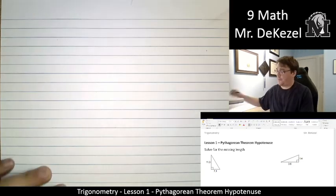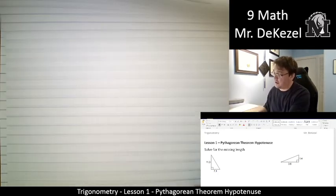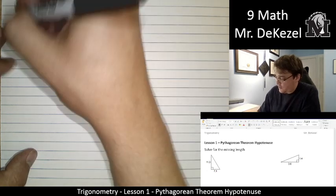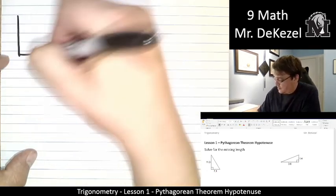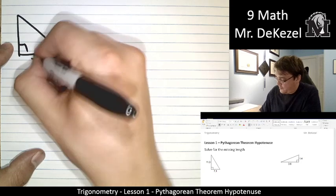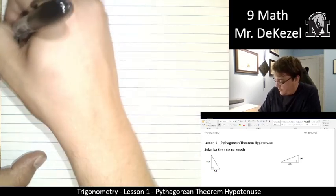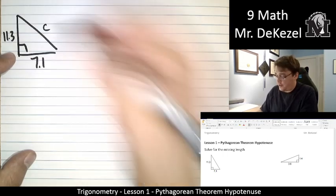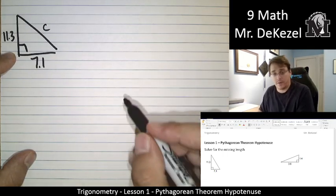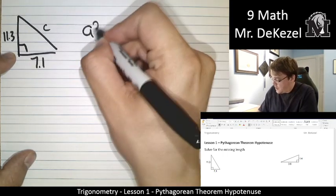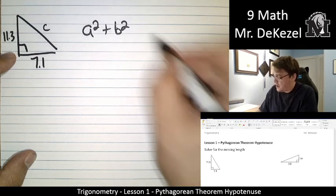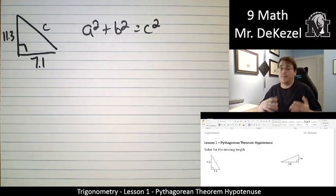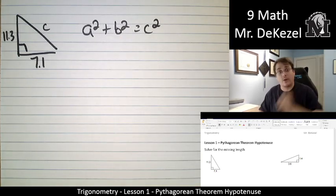Let's get right into it. We're going to use our calculator in this unit a lot, so it's going to be free to use. So we have this triangle, 7.1 on the bottom, 11.3 on that side, and we're looking for the hypotenuse C. And our equation that we always use is A squared plus B squared is equal to C squared. This is the Pythagorean theorem equation.